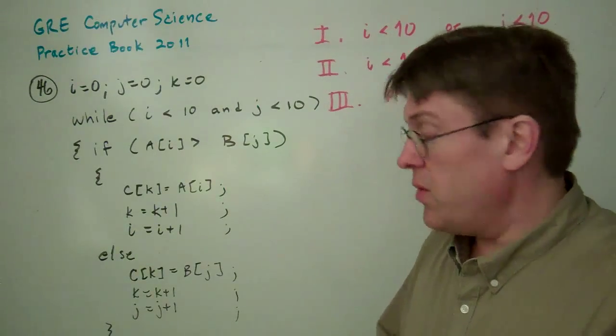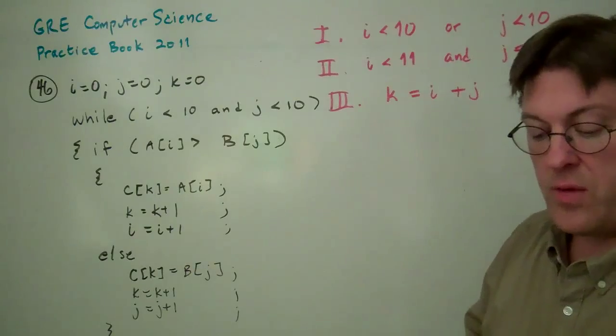So the question is, which of the following, one, two, or three, could serve as a loop invariant for the while loop?